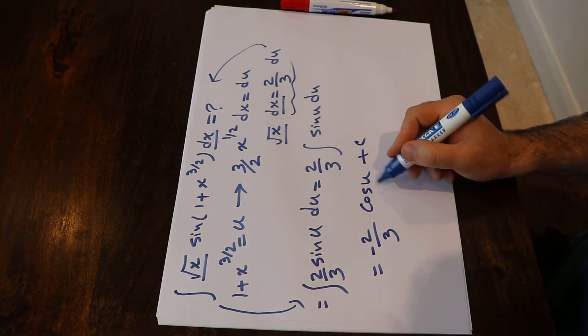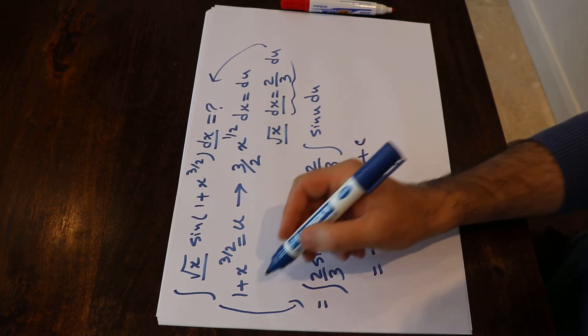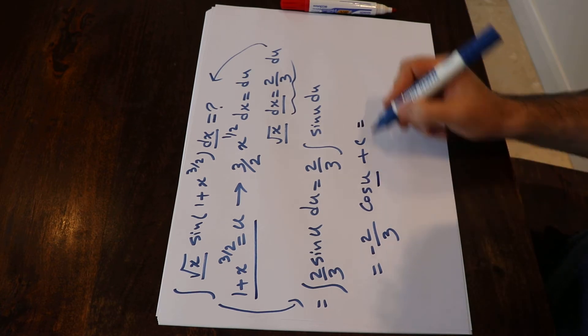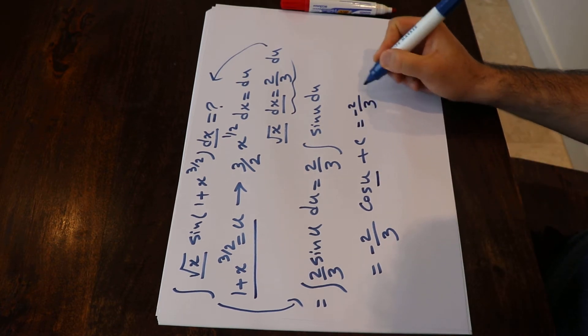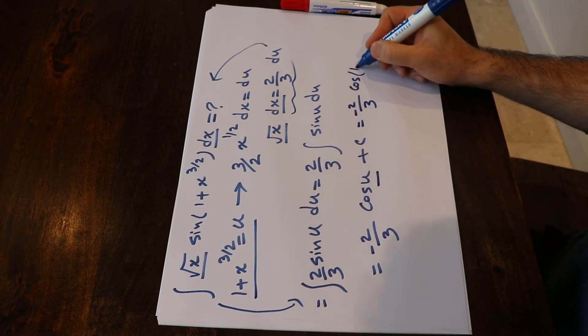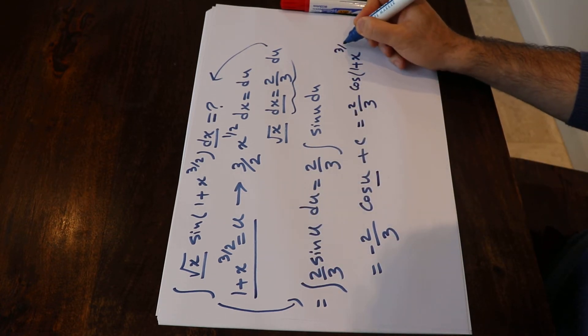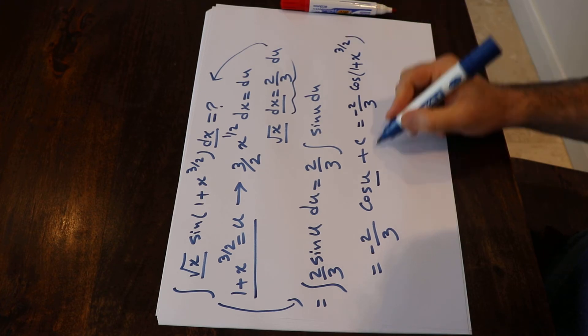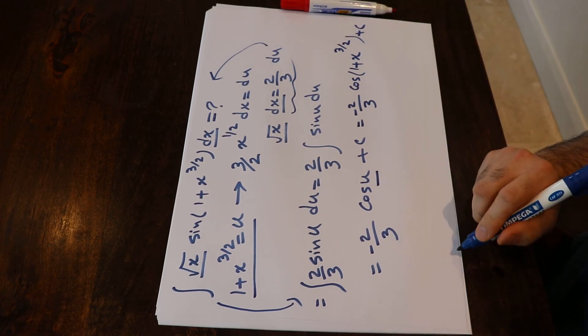All you need to do at this stage is substitute the value of u with the definition you used at the beginning, which equals minus 2/3 times cosine of 1 plus x to the power of 3/2 plus c, the constant of the integral.